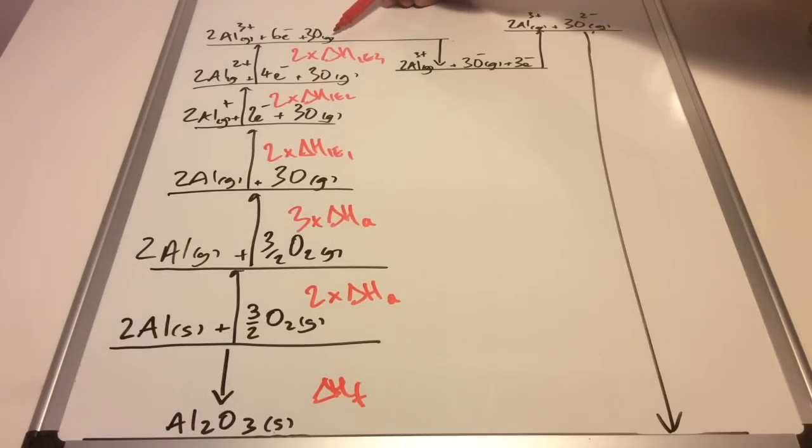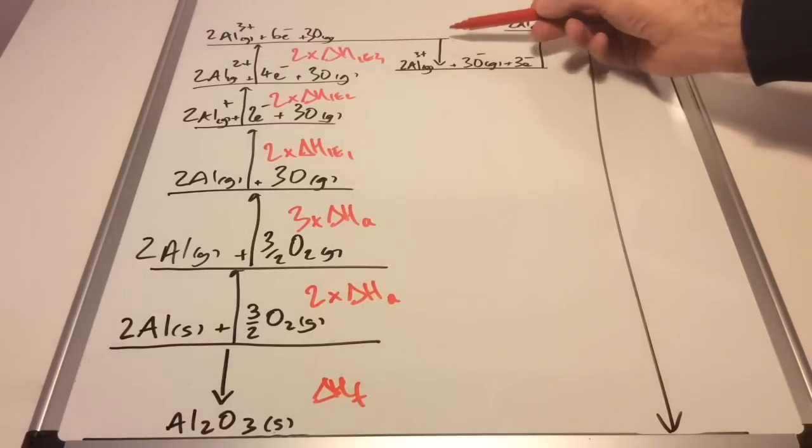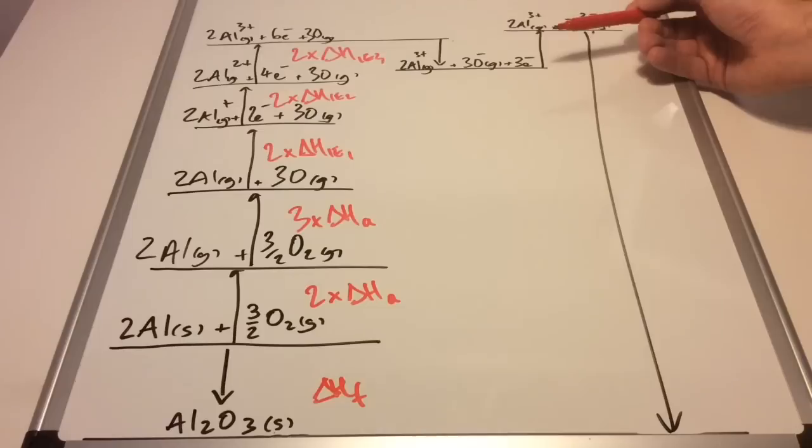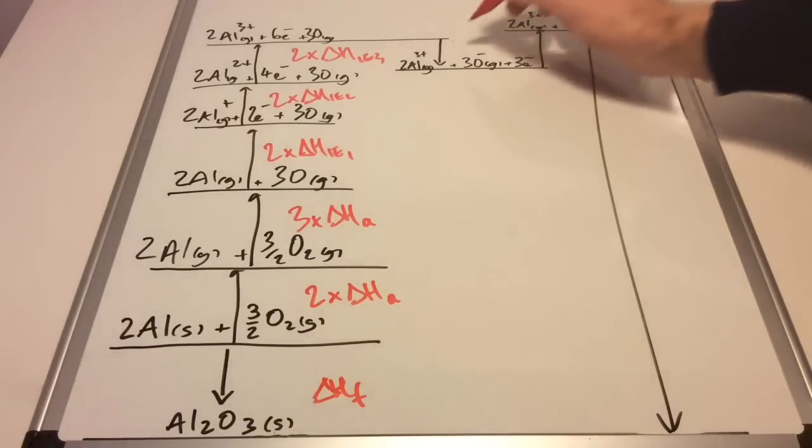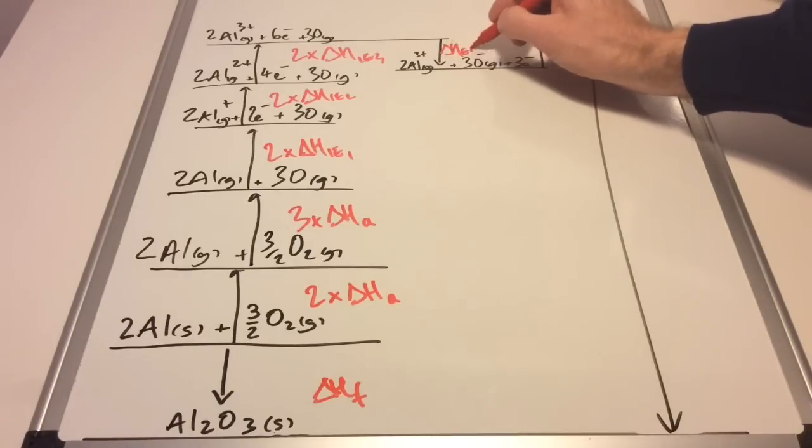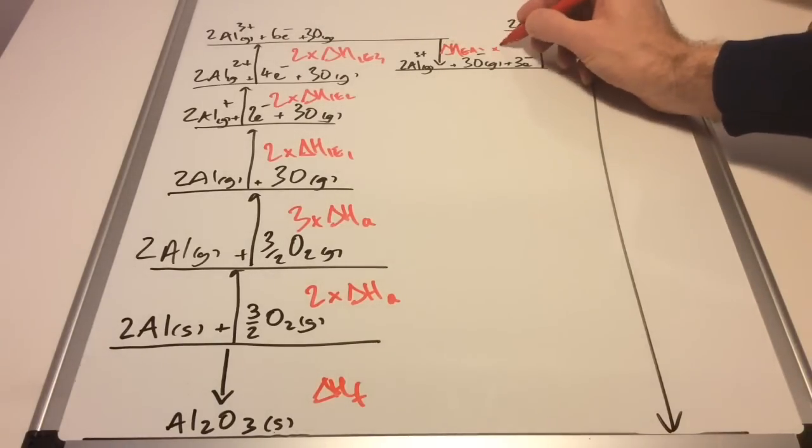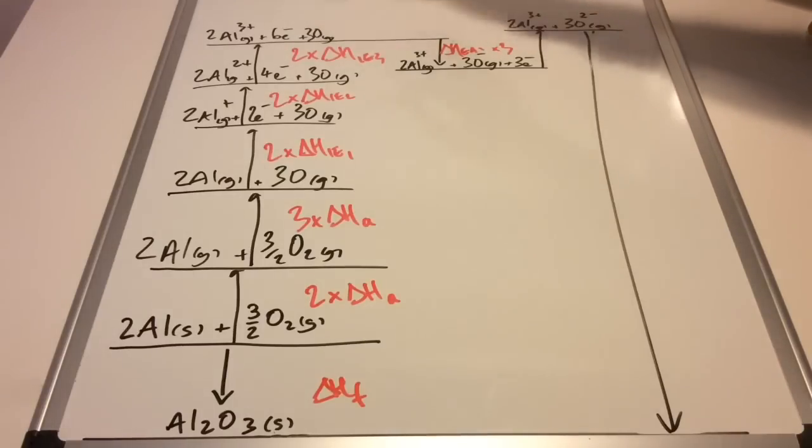We'll move on to the oxygen now. What we need to do is turn this into gaseous 2- ions, and we have to do that one step at a time. The first thing we do is turn them into O⁻ ions, one minus, so that's the electron affinity. That's ΔH EA1, and we've got three of those because there are three oxygens, so we multiply that by three.